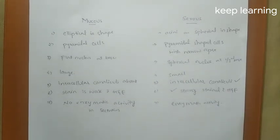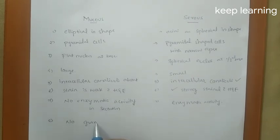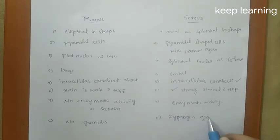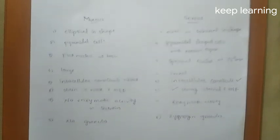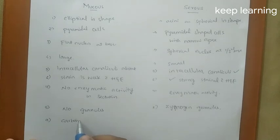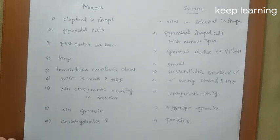The mucous cells do not contain any eosinophilic granules — there are no granules in the mucous cells — whereas in the serous cells there are zymogen granules, which are eosinophilic and stain eosinophilically. Lastly, mucous cells secrete more carbohydrates, whereas serous cells produce more proteins than carbohydrates. These are the differences between the mucous and the serous cells.